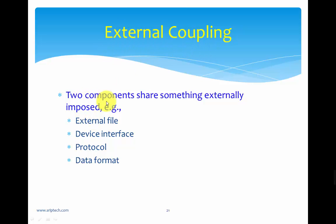External coupling occurs when two components share something externally imposed. Unlike common coupling where functions and variables are in the same program, external coupling involves functions accessing an external device, file, device interface, protocol, or data format. When components access such external entities, we call it external coupling.